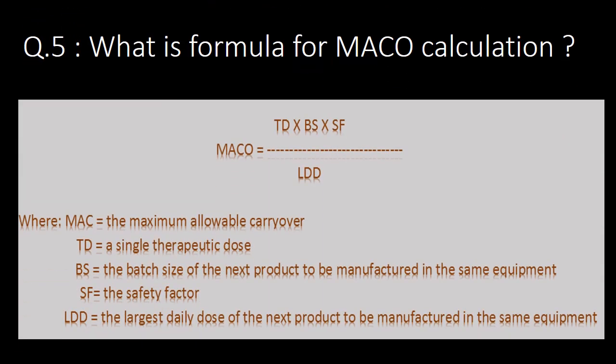The next very frequently asked question: what is the formula for MACO calculation? You can see the formula on the screen. It is a multiplication of three factors: first, TD which is a single therapeutic dose; second, BS which is the batch size of the next product to be manufactured in the same equipment; and third, the safety factor. This multiplication is then divided by the LDD value, which is the largest daily dose of the next product to be manufactured in the same equipment.